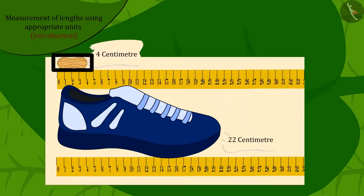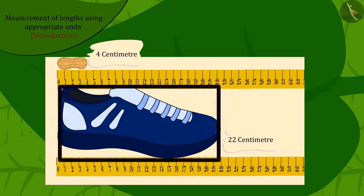Because the length of the peanut is much smaller than that of the shoe, length of the peanut will be 4 cm and shoe length will be 22 cm.